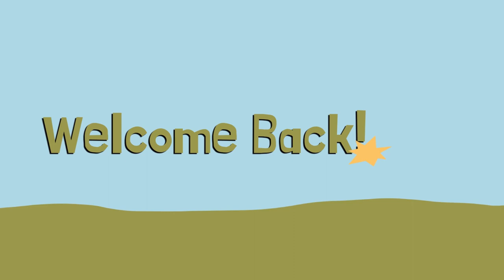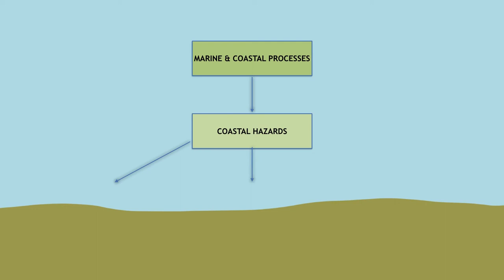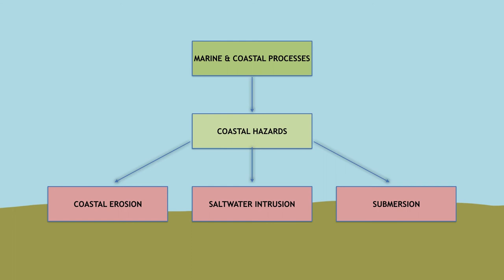And we are back! Now let us look at the concept map on page 10. The map shows the relationship between marine and coastal processes. At the top, we have marine and coastal processes. Below it are processes such as waves, tides, sea level change, storm surge, and crustal movement. These processes have environmental effects that may result in coastal hazards such as coastal erosion, saltwater intrusion, and submersion.